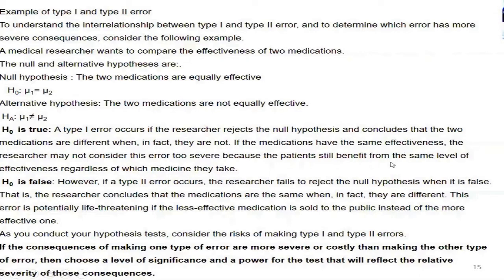So a patient came to buy medicine. The researcher said medicine 1 is better and gave medicine 1. But the patient could have taken medicine 2 as well. Whichever medicine the patient took, he got the same benefit. The medicine effect is actually the same, but the researcher said it is not the same. So the patient is given medicine 1 instead of medicine 2, but the patient is getting the same benefit. This is the consequence of type 1 error.